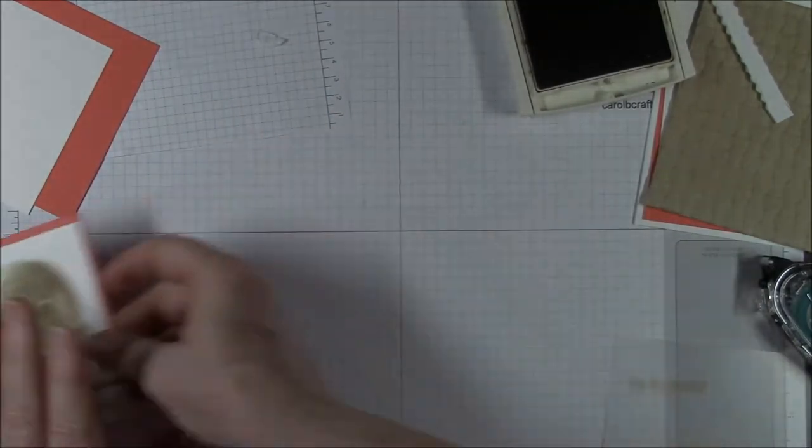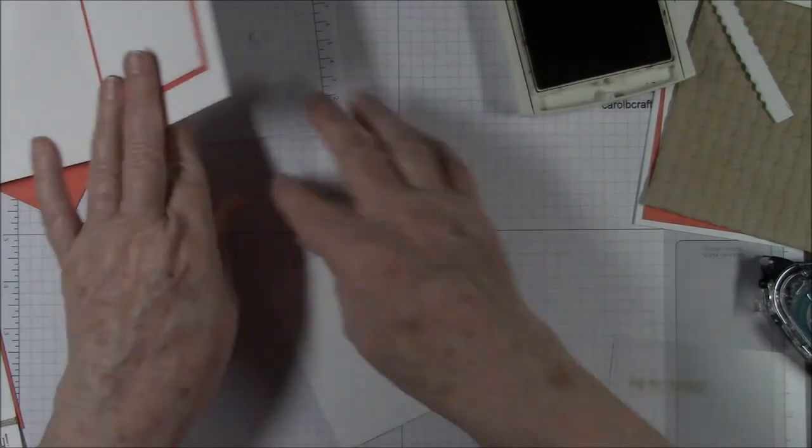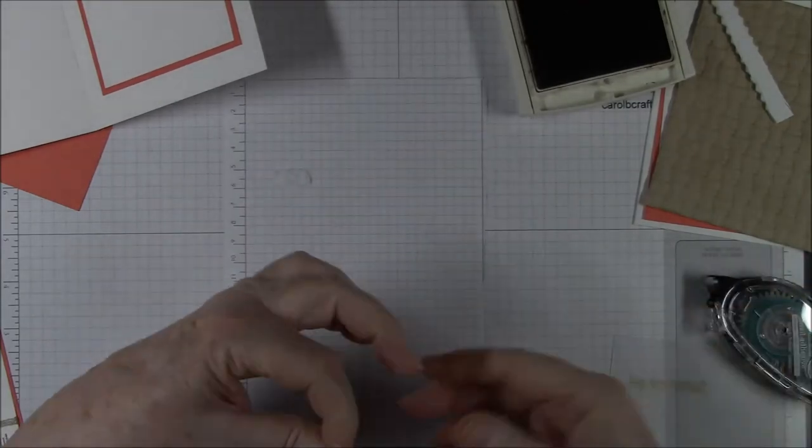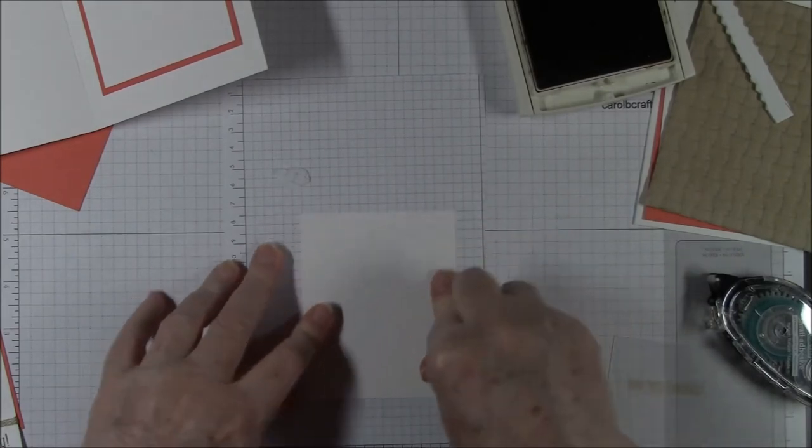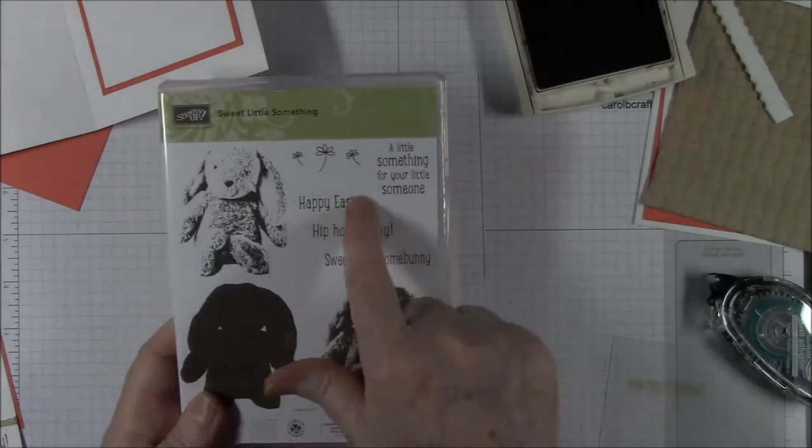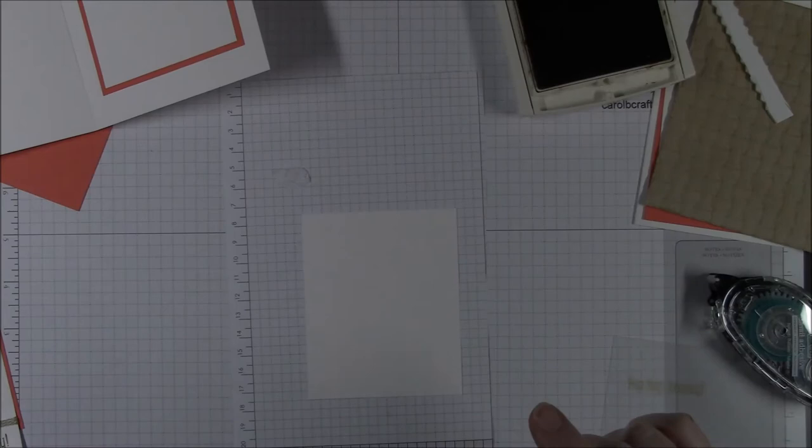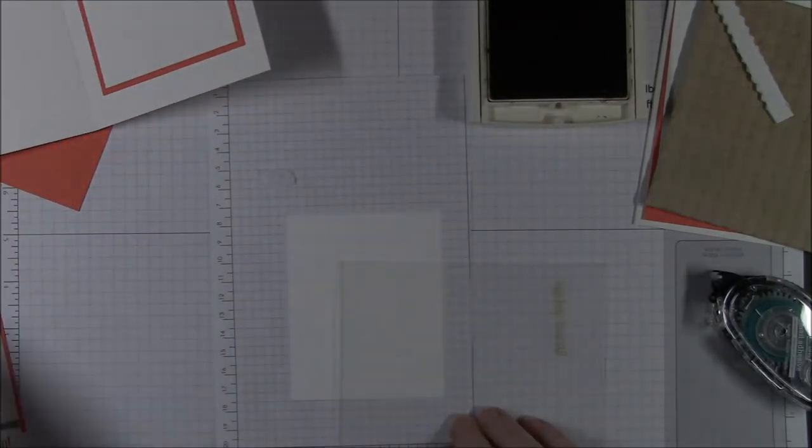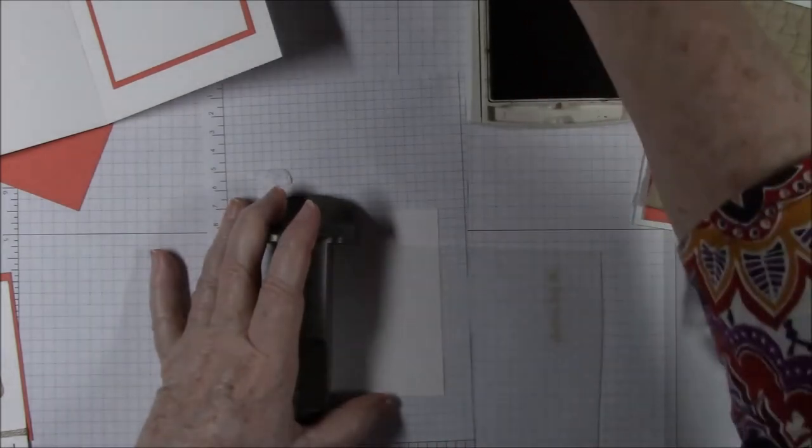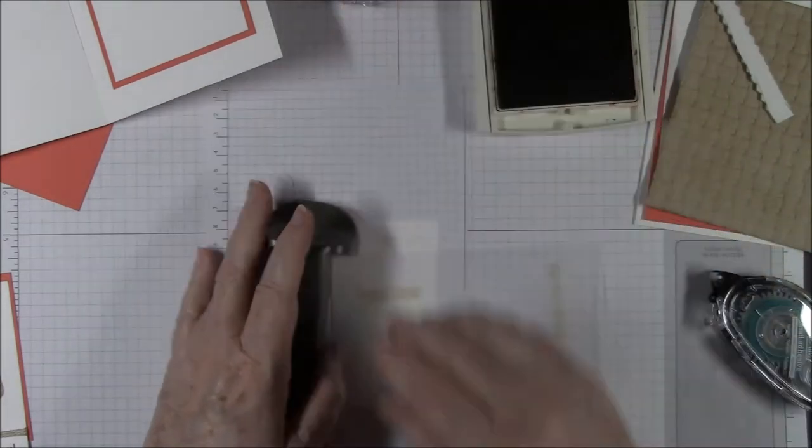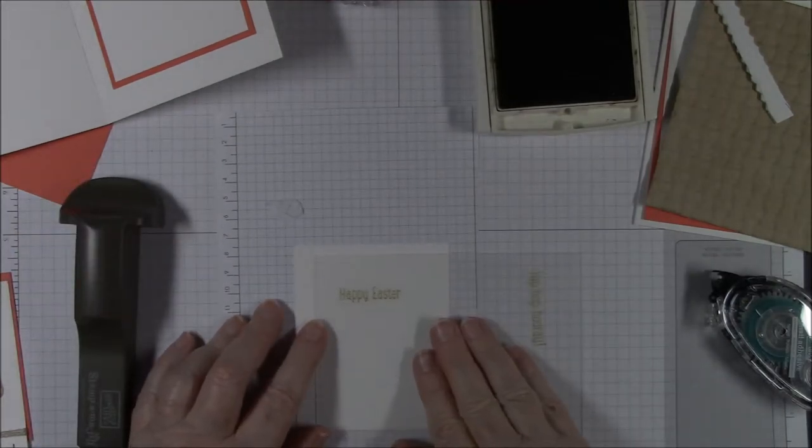Okay, so now we'll go ahead and stamp the sentiment, which is right here. And that piece of Whisper White is 3 and 1/4 by 4. And I'll get my piece of paper out again, turn it down here, and we're going to put this on our paper. This one we're going to use the Happy Easter right here. That was cute. Hip Hop Hooray and Happy Easter on the inside, and then these three little flowers. So I have this on a d-block and I'm going to use my stamp-a-ma-jig if I can find it. And Happy Easter, Soft Suede, straight down.